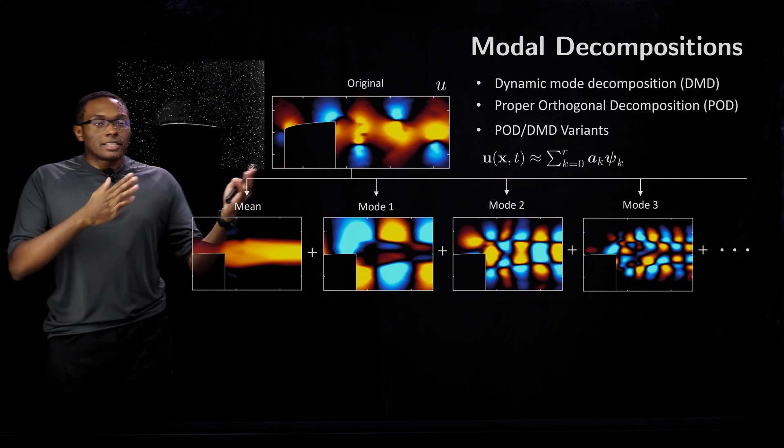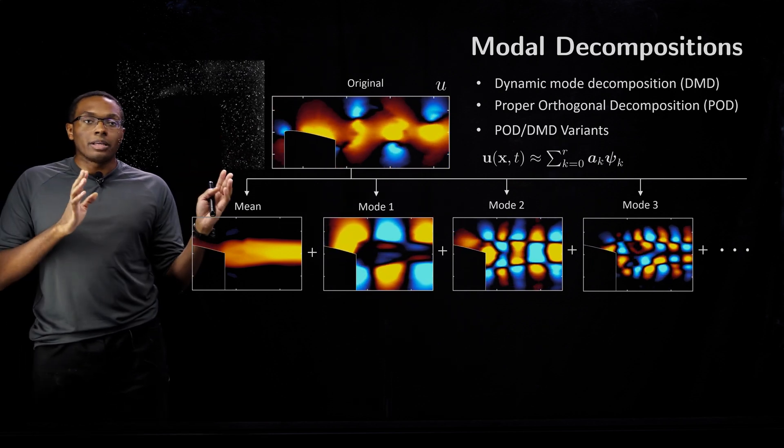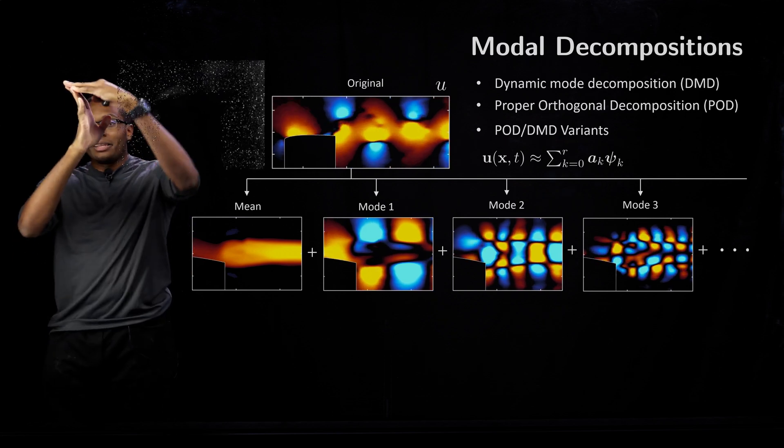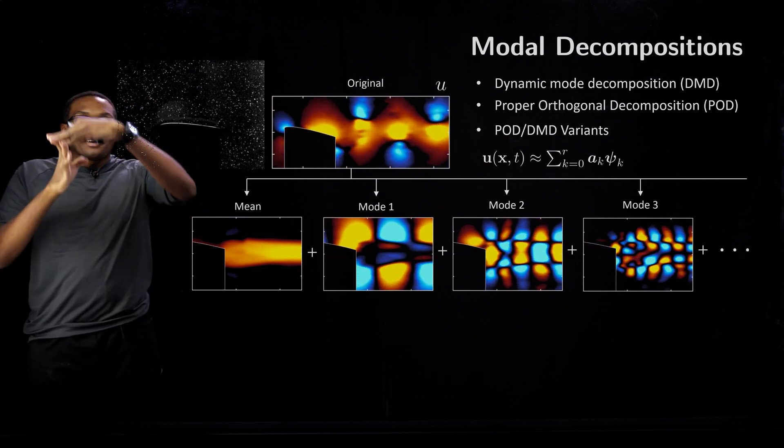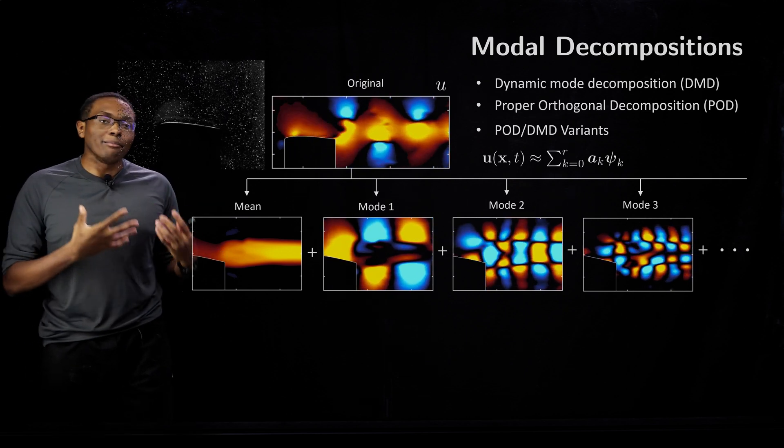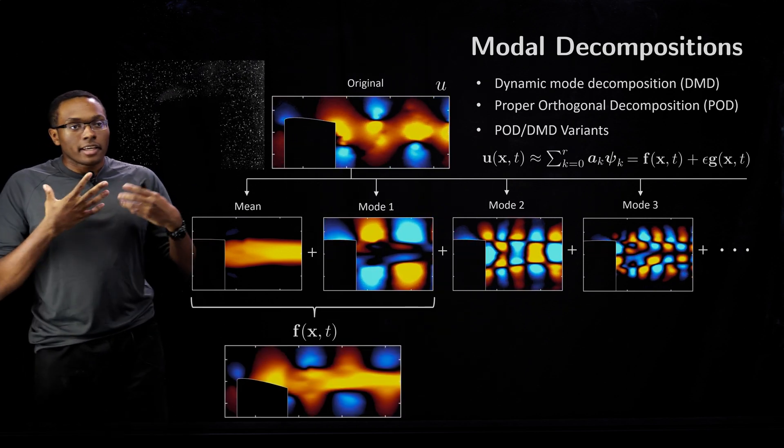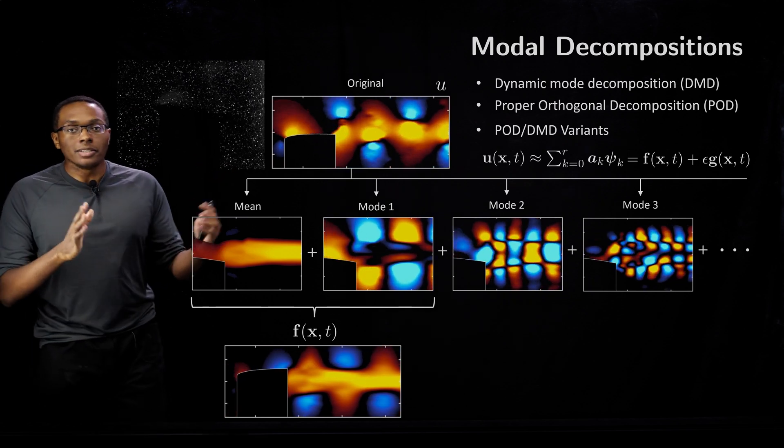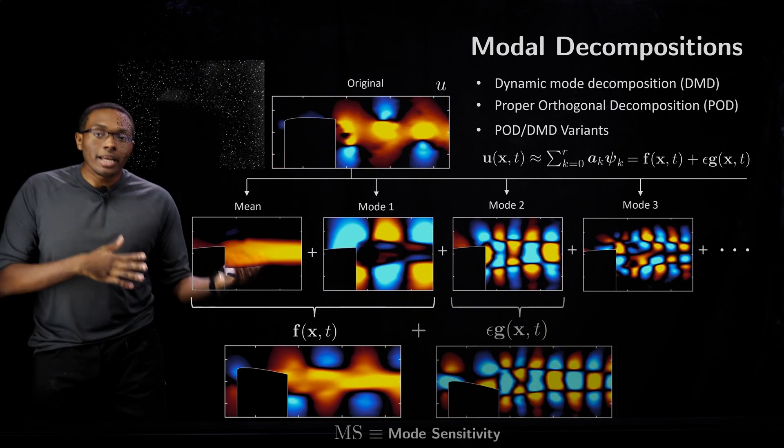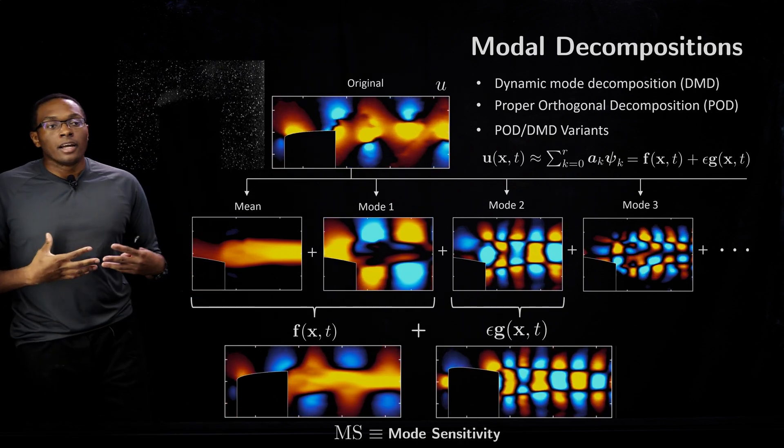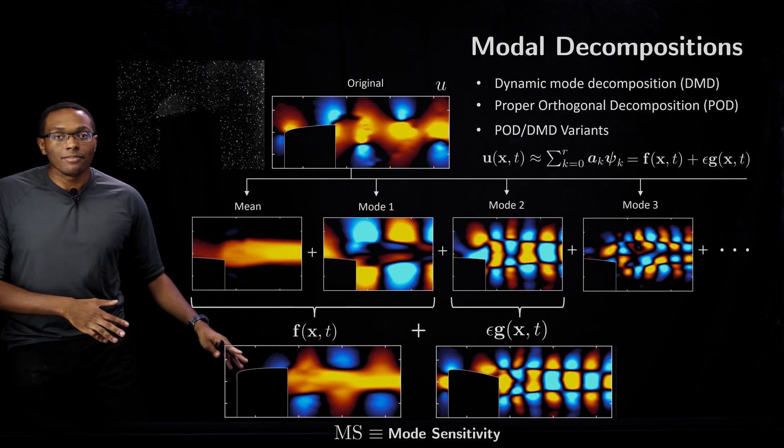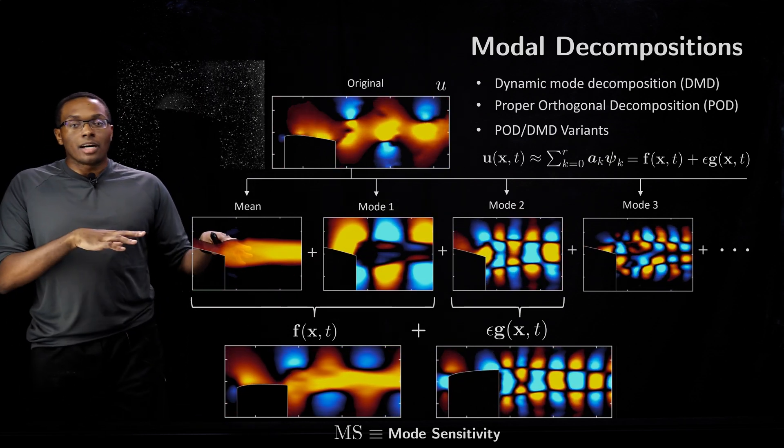This is experimental particle image velocimetry data of an oscillating, heaving and pitching airfoil. The idea behind mode sensitivity is to say, can we consider a certain set of modes as our main dynamical system F, and can we consider the remaining modes that we're interested in as our perturbation G, and can we compute the mode sensitivity field with this model?